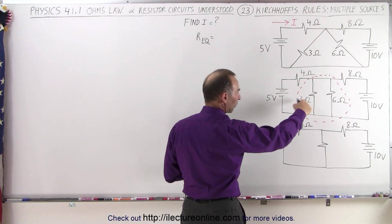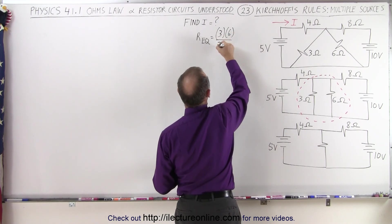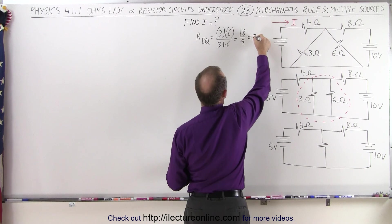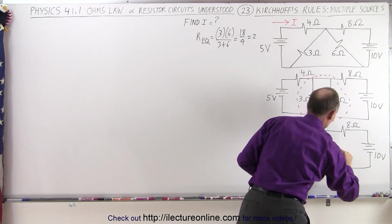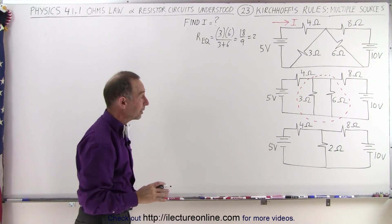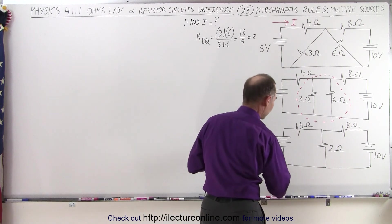So we're going to use the product of the sum. That's three times six over three plus six, which is 18 over nine, which is equal to two ohms. So this now becomes a two-ohm resistor. And now it looks a lot like one that we've seen before. So we can go ahead and prepare to use Kirchhoff's rules.